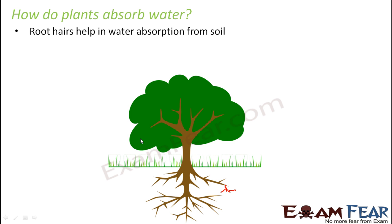Root hairs help absorb water because they are very thin-walled and large in number, which increases the surface area. There are several root hairs, so surface area increases and therefore absorption increases. Being small as well as thin-walled, all these properties together help the root hairs to absorb more and more water from the soil.